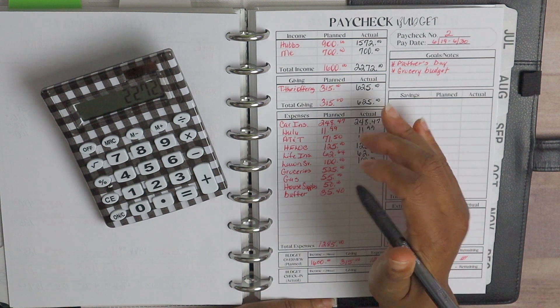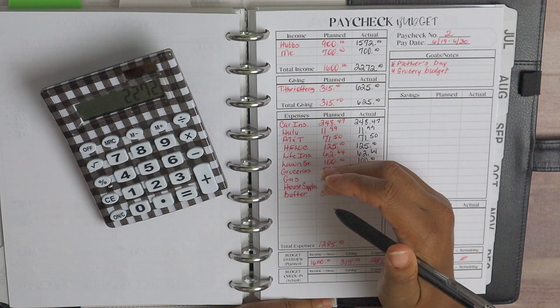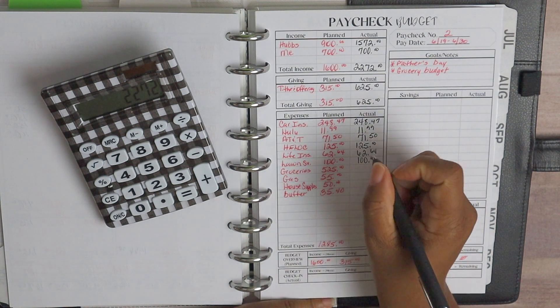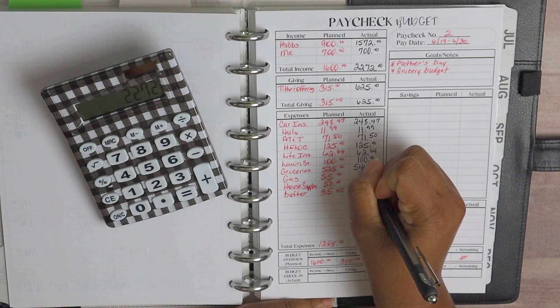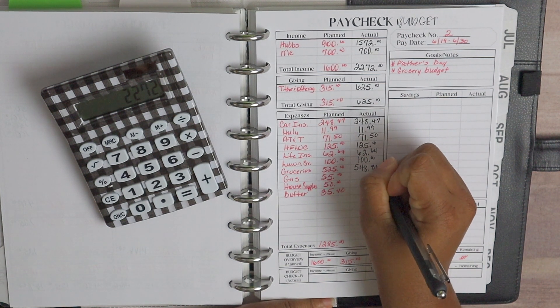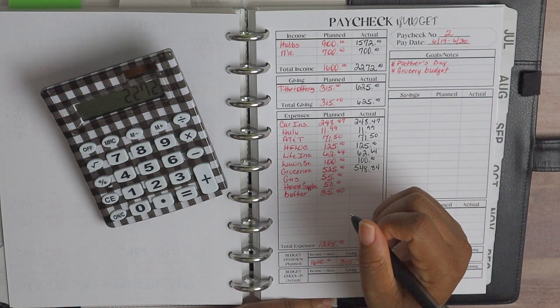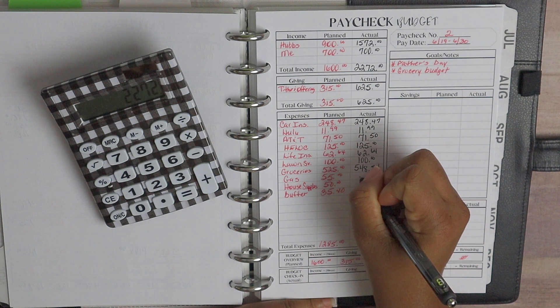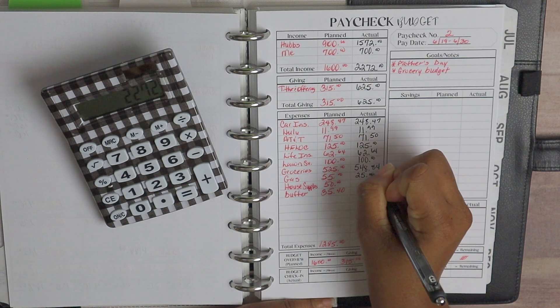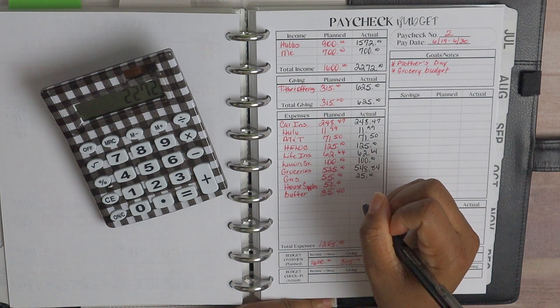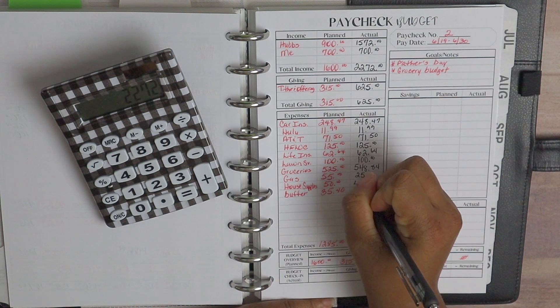But I am hopeful that for the overall monthly budget we should be under, but for this paycheck number two it came in at $548.84. And then for gas, we came in at $25. And then for house supplies, we actually spent $44.54.